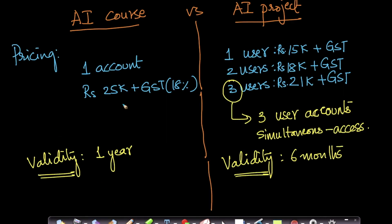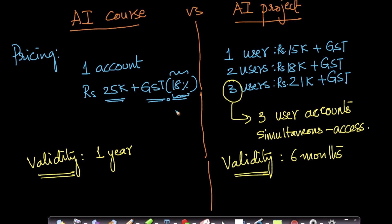Pricing is an important parameter for many students. For the AI course, you get one account with one login. The cost is ₹25,000 plus GST. GST for education services in India is 18% — it stands for Goods and Services Tax, India's unified tax system. The validity of the AI course is one year.